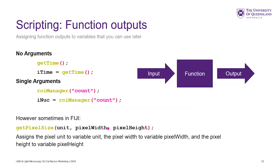Some of them use the same variable names. It assigns the pixel unit to the variable 'unit' and the pixel width, etc. But there's another one called getImageSize that also has 'w'. So just be careful with overriding of variable names.